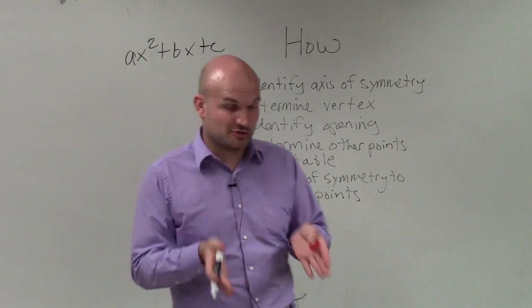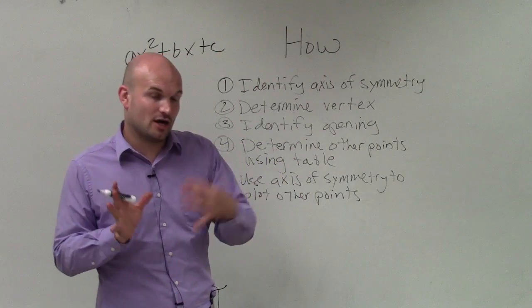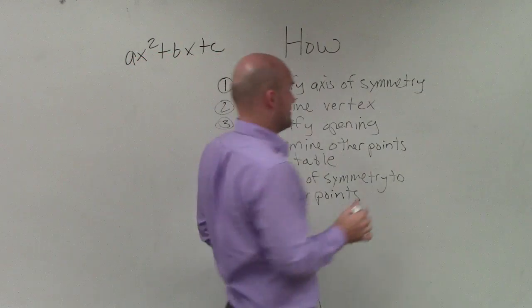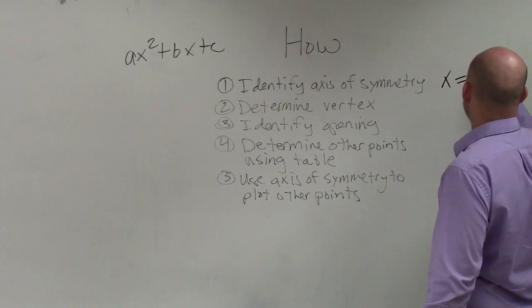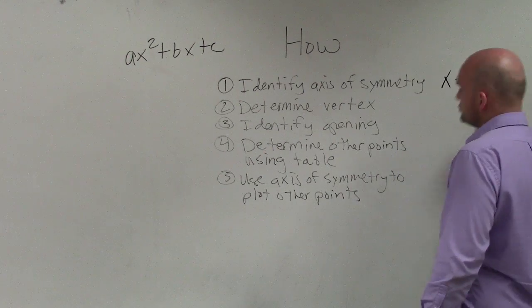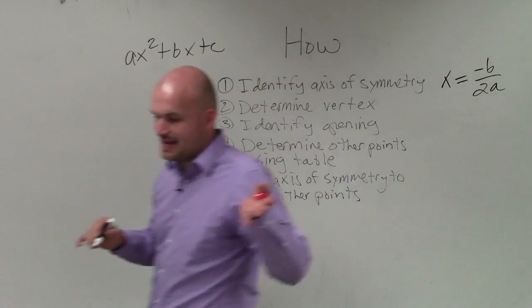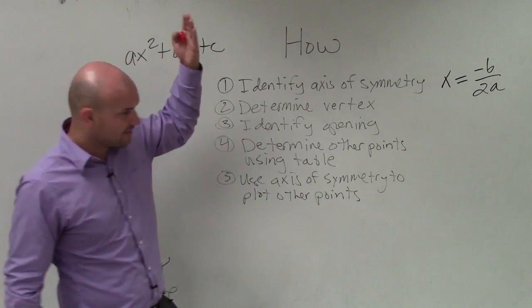To identify the axis of symmetry, that's going to be our vertical line that our quadratic is symmetric about. That's going to be equal to x = -b/(2a). Now remember, that represents a vertical line.